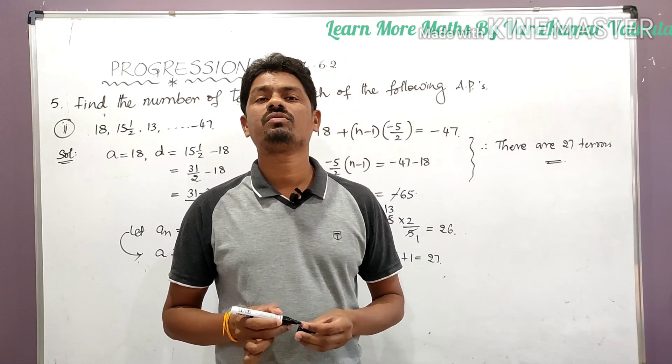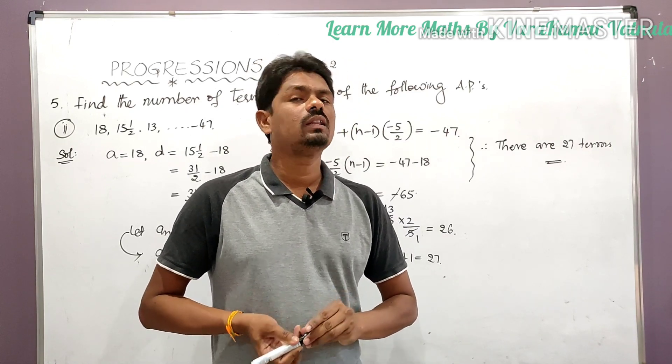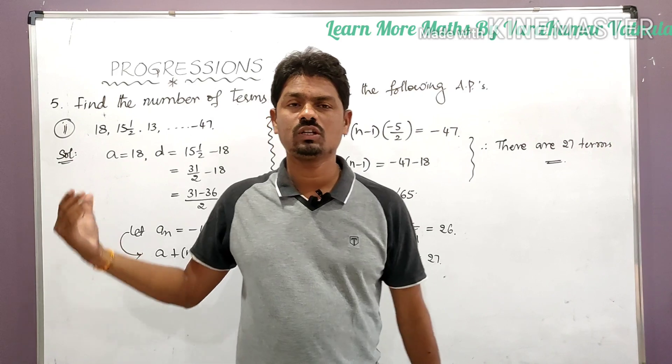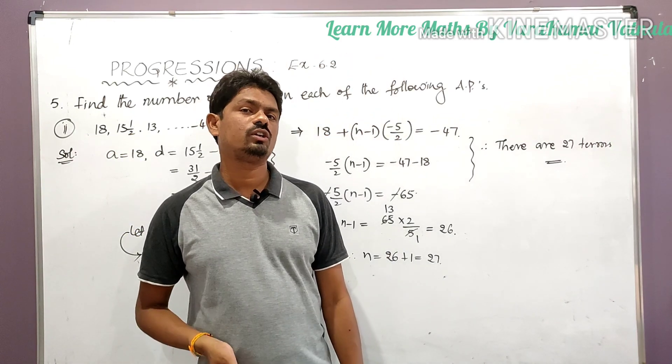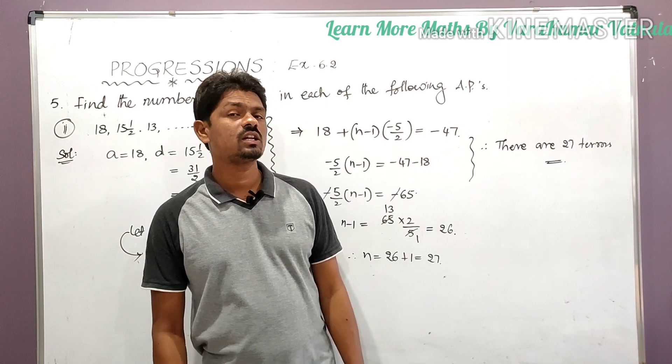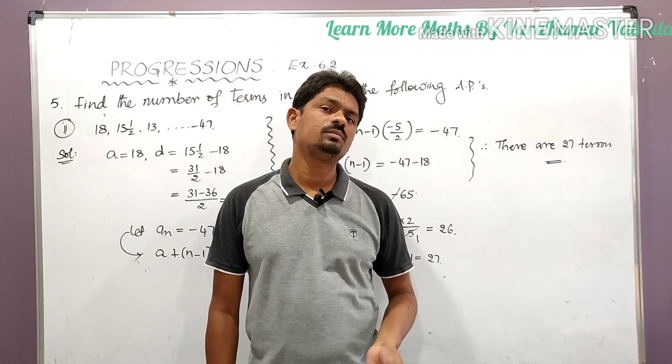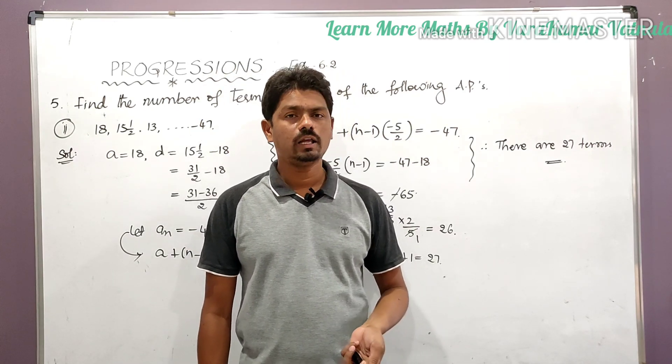So like this we can find the number of terms or the nth term in the given AP using the formula a_n is equal to a plus (n minus 1) into d. So that's all for today's class student. To get latest updates subscribe to my channel Learn More Math.